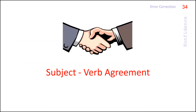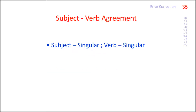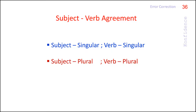Another area where we make mistakes is subject-verb agreement. As we all know, if the subject is singular, the verb must be singular, and if the subject is plural, the verb has to be plural. Subject-verb disagreement is a common error in questions based on error correction. This is quite common in sentences where two subjects are connected with a conjunction. Let us look into it.